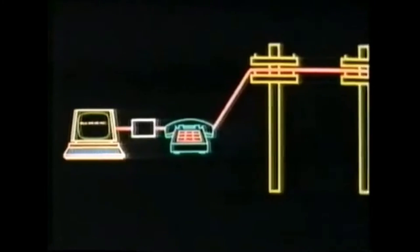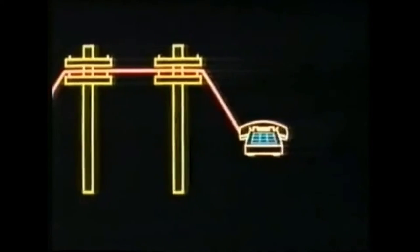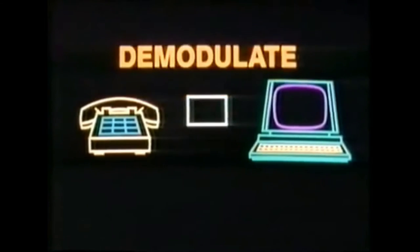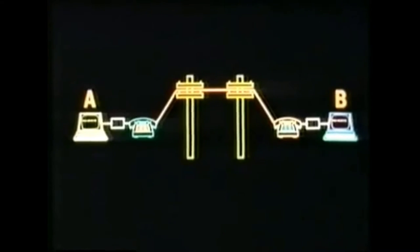At the destination system there is again a telephone system and a computer system. So here again a device is required which can convert analog data to digital data, so that the computer system can receive the message sent by the first computer. That means a device that can demodulate analog data to digital data — so here the message is received.